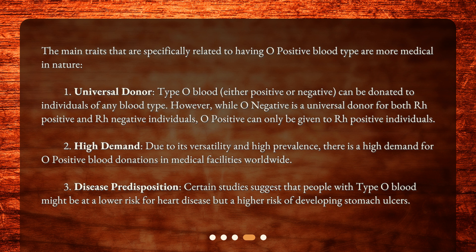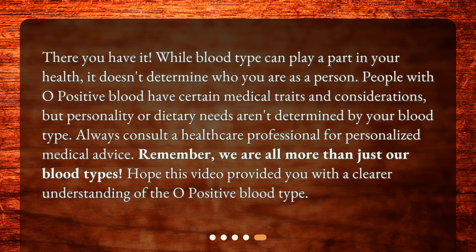Second, high demand: due to its versatility and high prevalence, there is a high demand for O positive blood donations in medical facilities worldwide. Third, disease predisposition: certain studies suggest that people with type O blood might be at a lower risk for heart disease, but a higher risk of developing stomach ulcers.